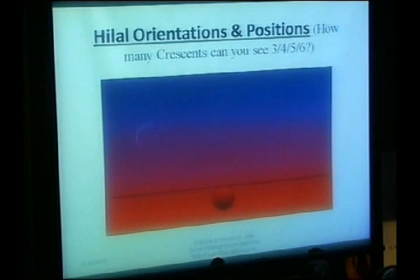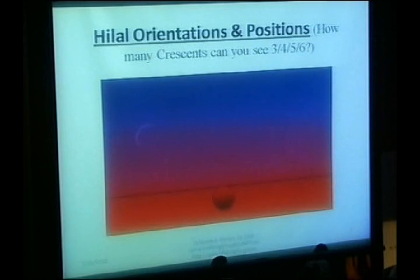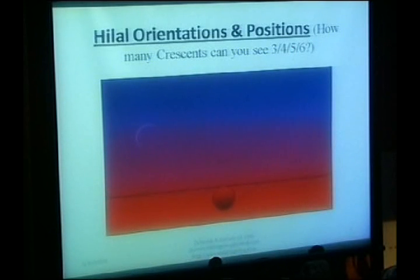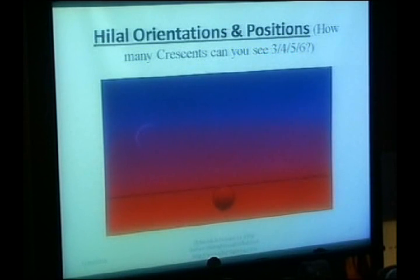I'm going to count, and you can raise your hands. Anyone can see one? How about two crescents? How about three? Four? Five? Six? It seems that the majority are about four, and I see that from the panel, who's quite close, he could see up to five. The reason is that even within this small group of people, there's going to be a variation in the number of crescents that people can see.